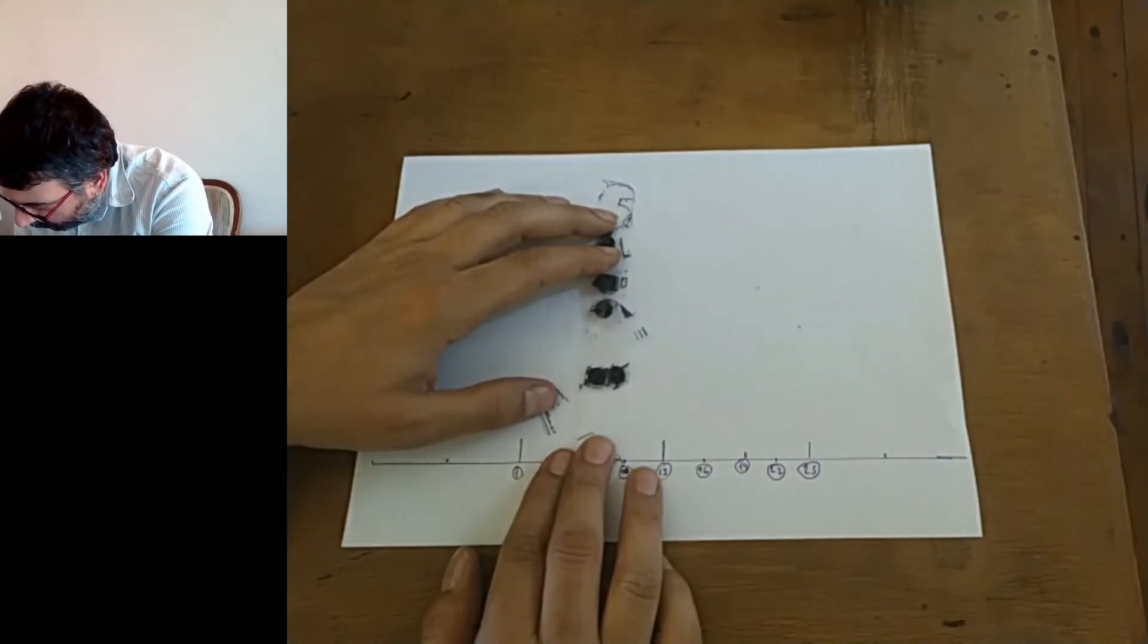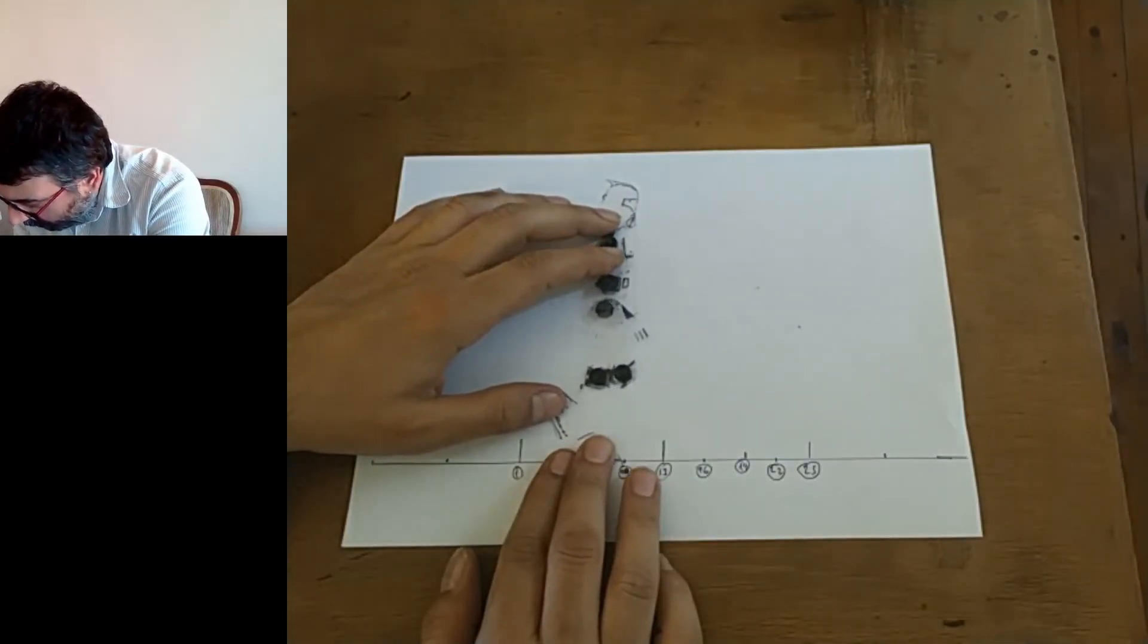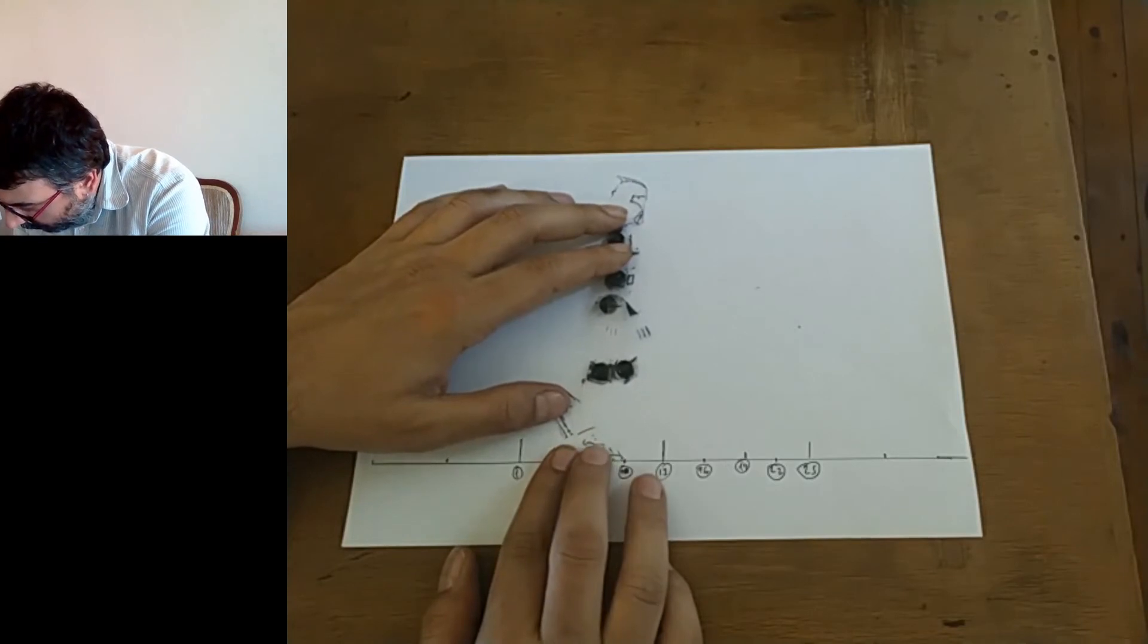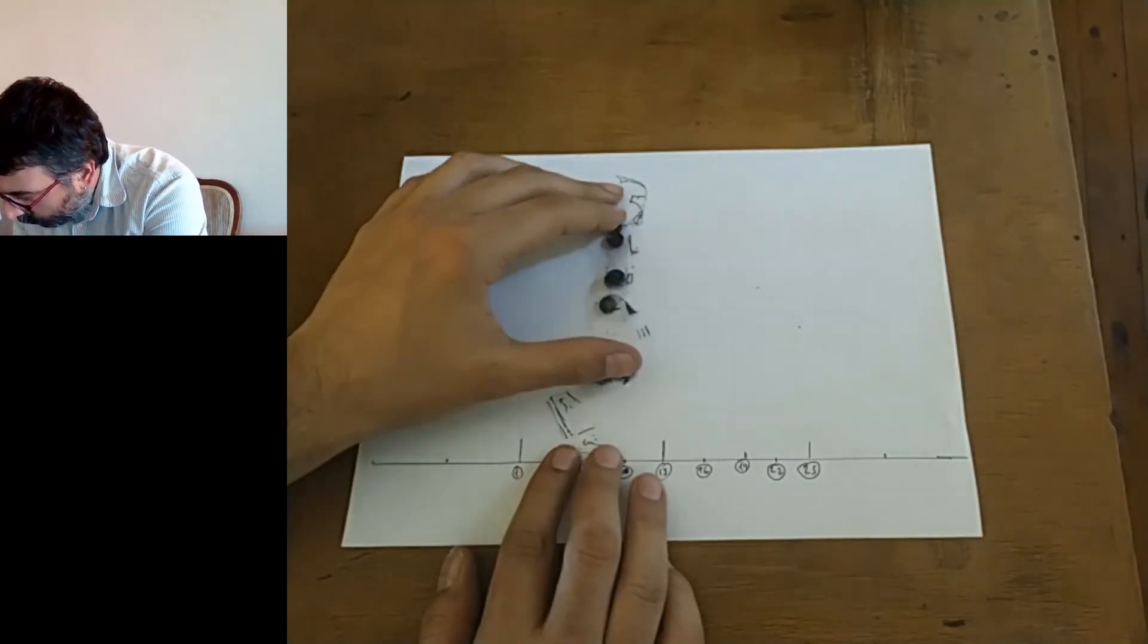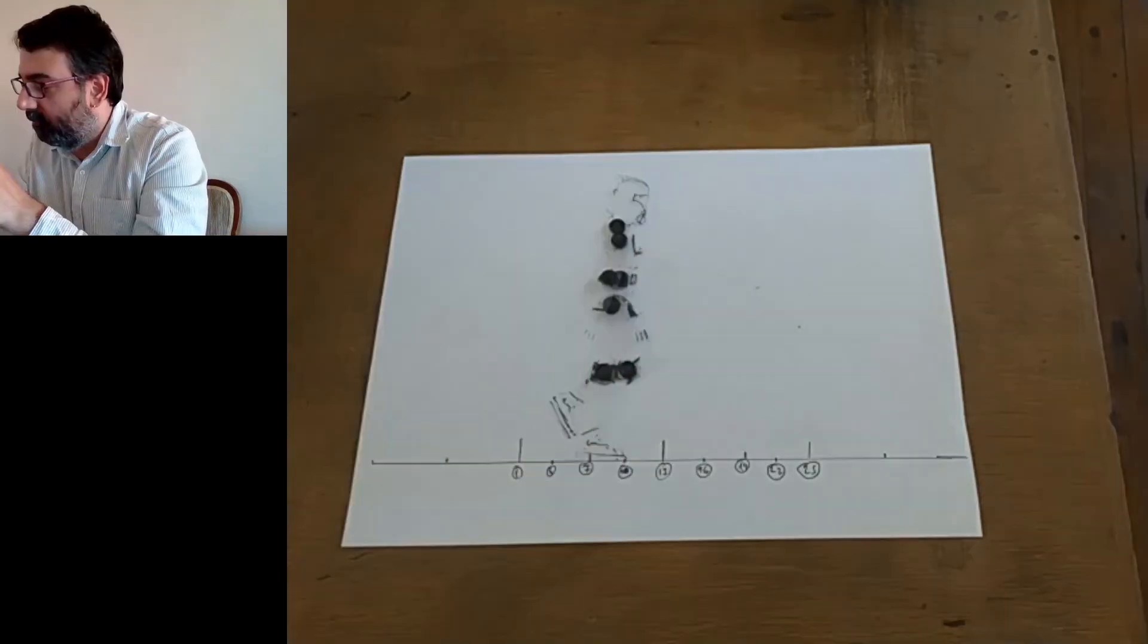In ninth frame, the leg which comes from back becomes the front leg by completely passing the other. Body of the puppet gets closer to ground again. Arms get wider.